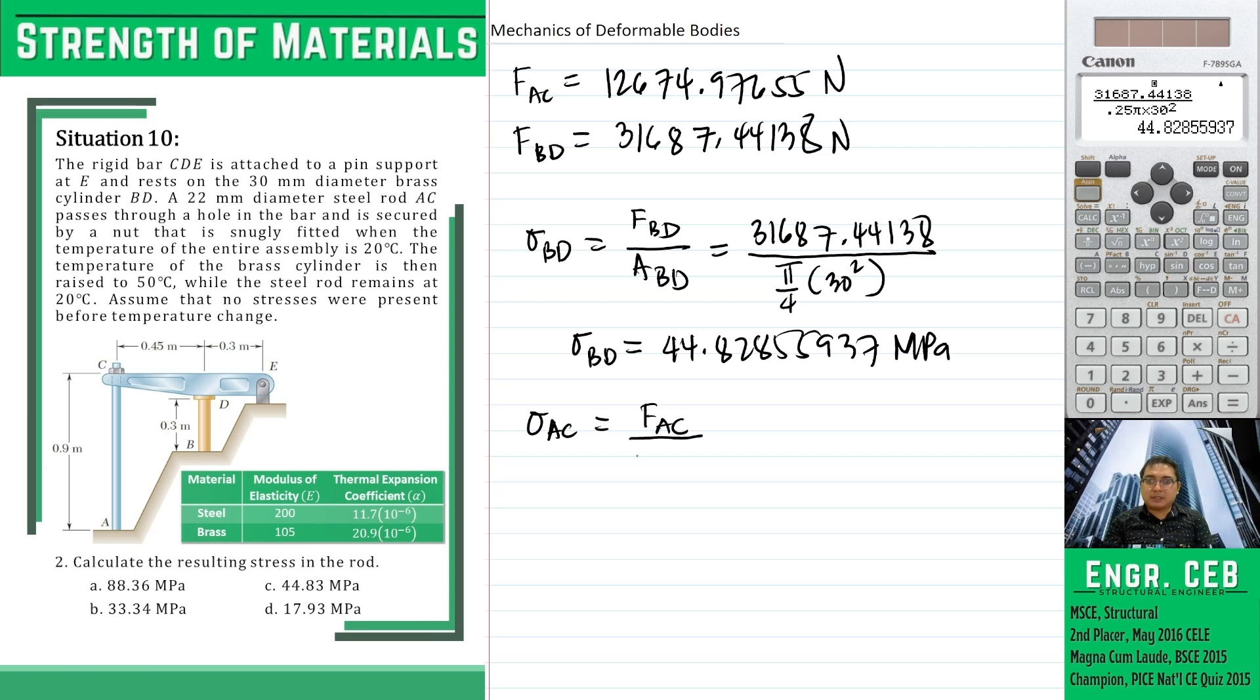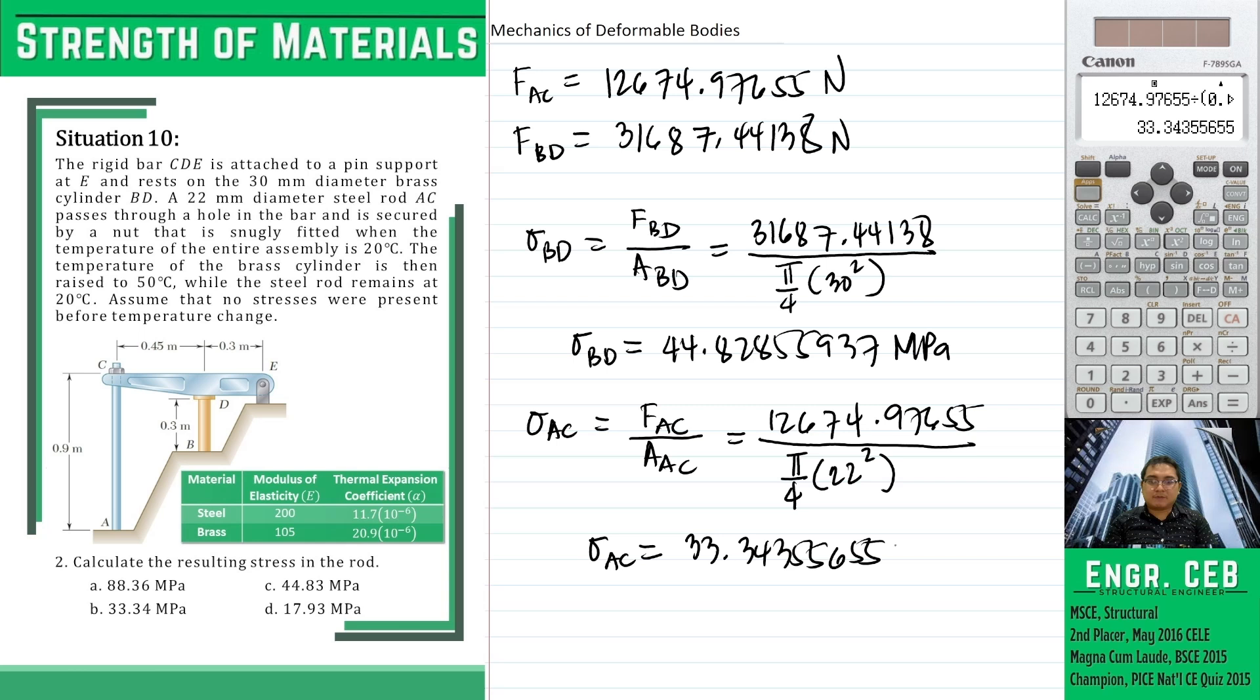f sub ec divided by area of ac. So 12,674.97655 divided by the area of rod ac. That is also a circle, π over 4 times 22 squared. Therefore, sigma sub ac or the stress in rod ac is 33.34355655 megapascals. And that is letter b.